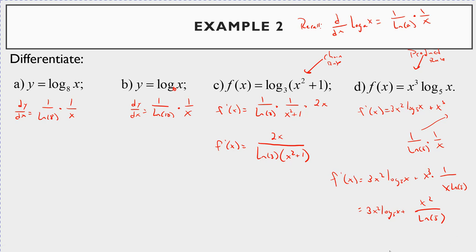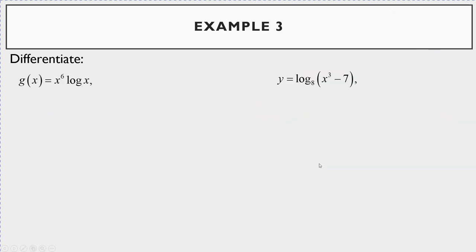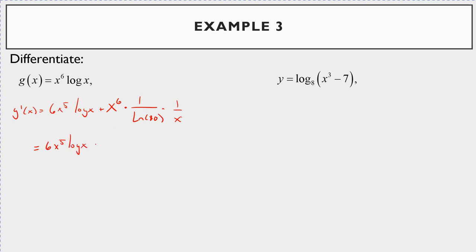Let's do two more examples. For g(x) = x^6·log(x) — log means log base 10 — you need the product rule. g′(x) = 6x^5·log(x) + x^6·(1/ln(10))·(1/x). The x^6 times 1/x gives x^5, leaving you with 6x^5·log(x) + x^5/ln(10).